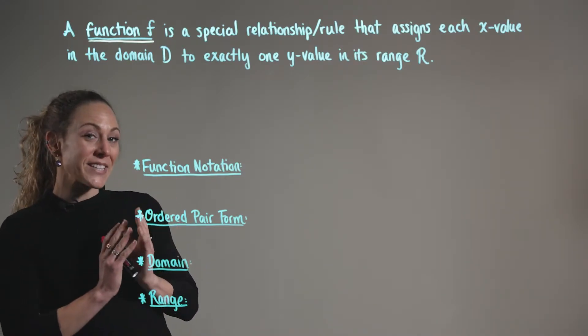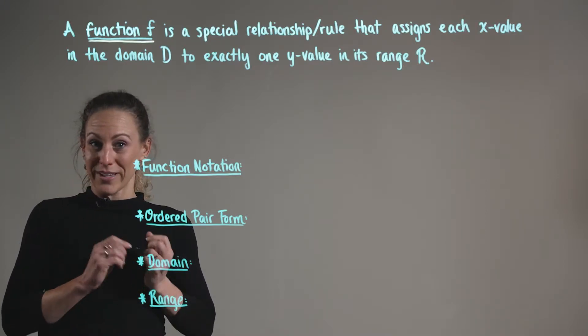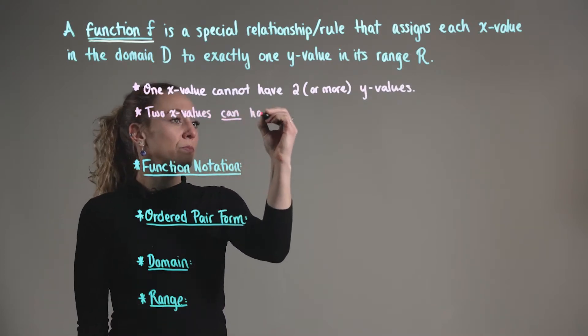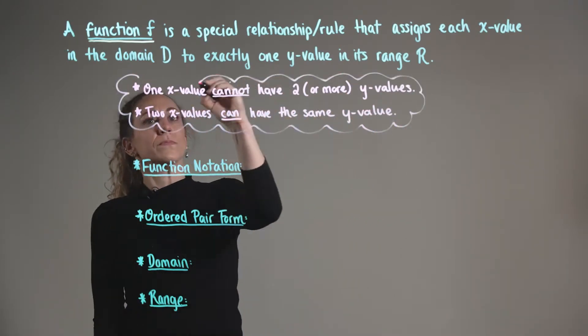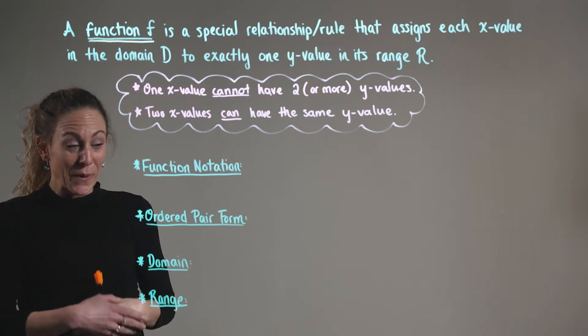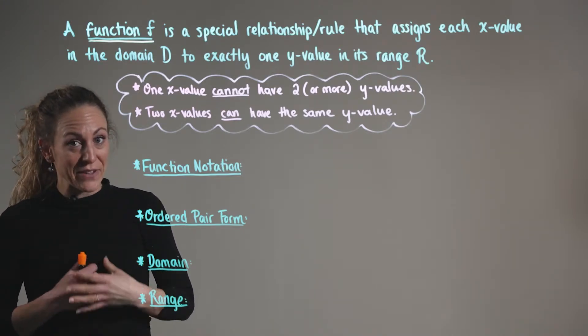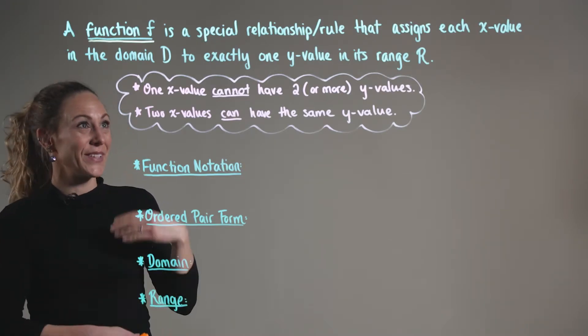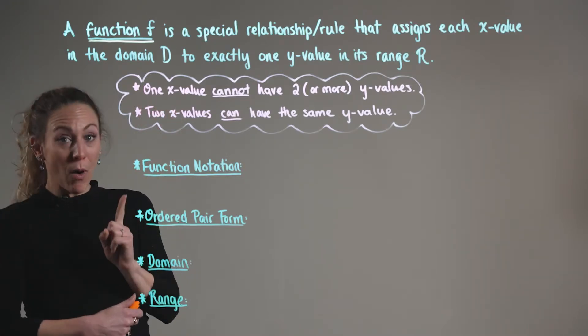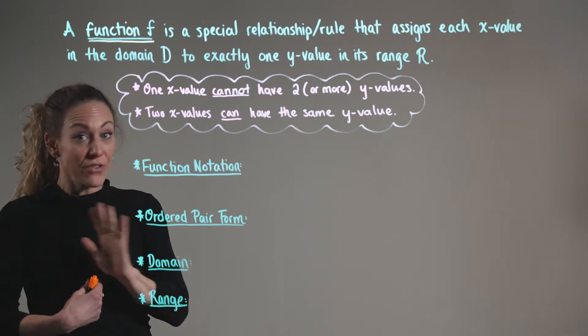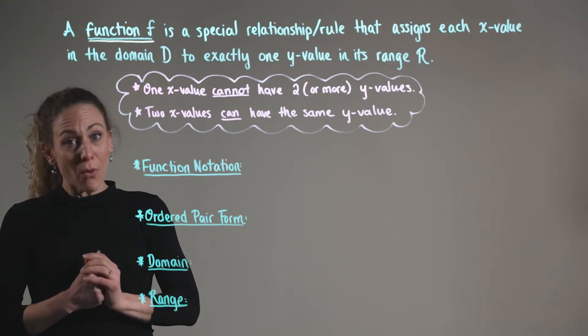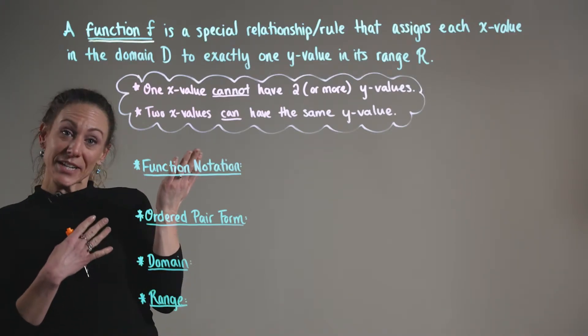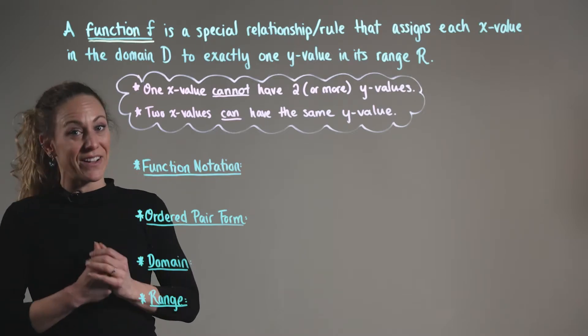A helpful way to think about this: one x-value cannot have two or more y-values. We also want to keep in mind that two different x-values can have the same y-value.